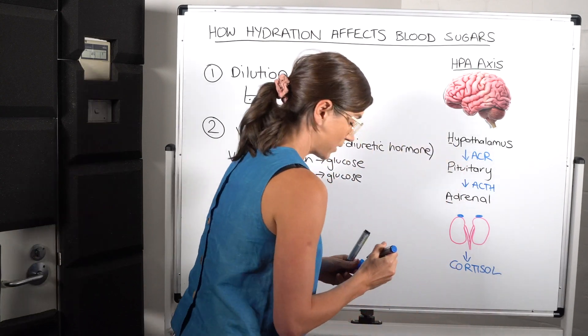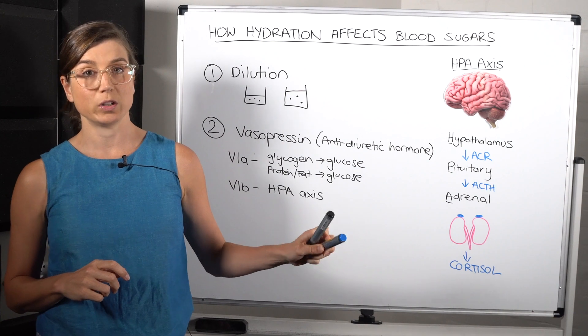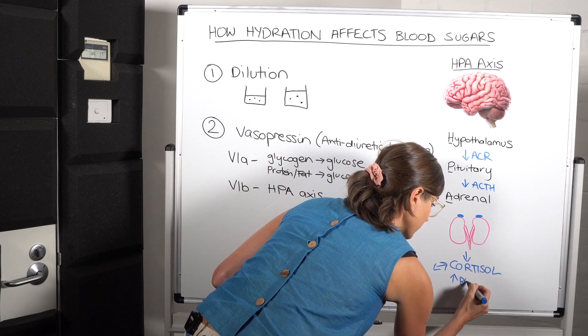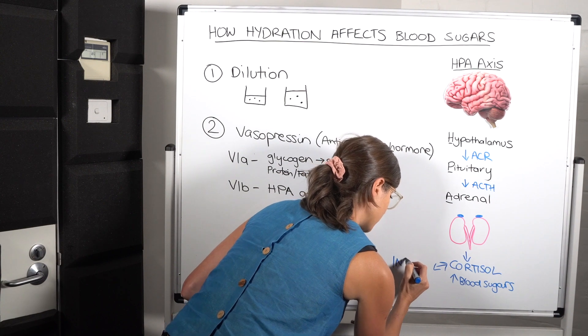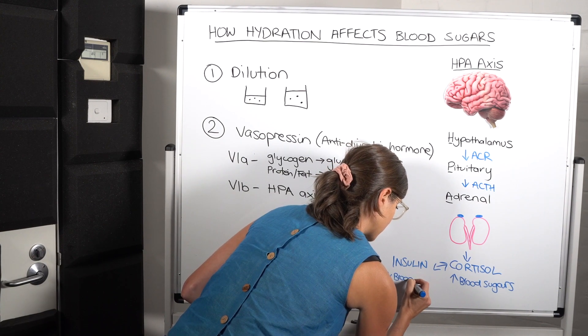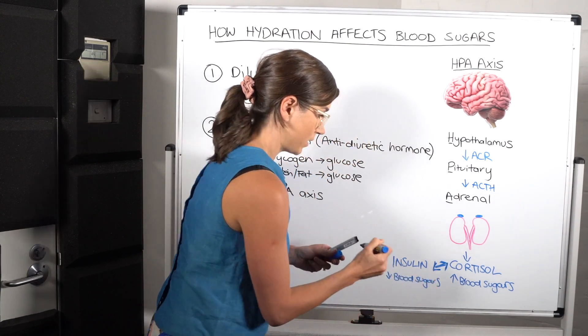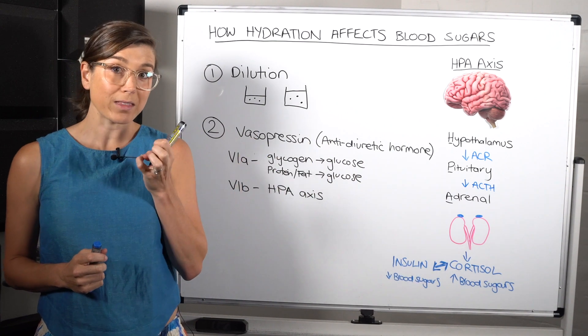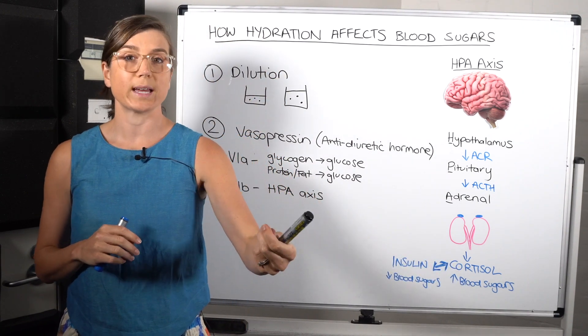And it will stimulate the adrenal glands to release cortisol. And cortisol is the stress hormone. So cortisol works in opposition to insulin. So cortisol will increase blood sugars, and insulin will reduce. So they work in opposition. So if the glucose is getting pulled out of the blood, it's going to make your blood sugar levels go down. While cortisol does the opposite, it's actually going to put more glucose into the blood.